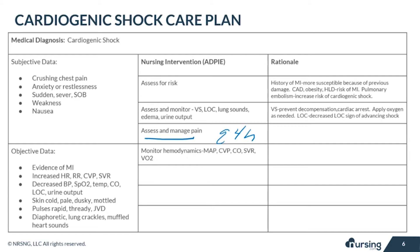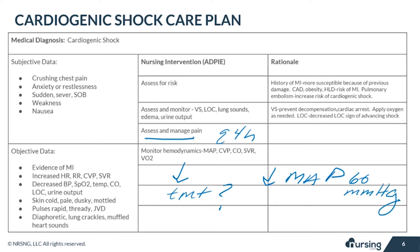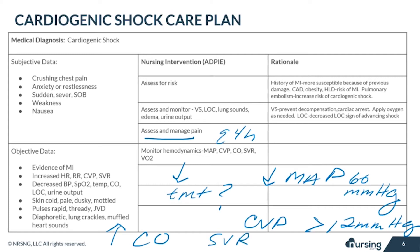Monitoring hemodynamics is critical — it tells providers how severe the shock is and whether the patient is responding to treatment. Mean arterial pressure (MAP) is the average pressure in the arteries; decompensating shock will show a MAP below 60 mmHg. Central venous pressure indicates preload; in cardiogenic shock this will be greater than 12 mmHg. Cardiac output takes the biggest hit in cardiogenic shock, so the goal is to increase it, measured via a flow track or pulmonary artery catheter. Systemic vascular resistance (SVR) will be high as the body compensates with vasoconstriction, and will return to normal if treatment is effective.